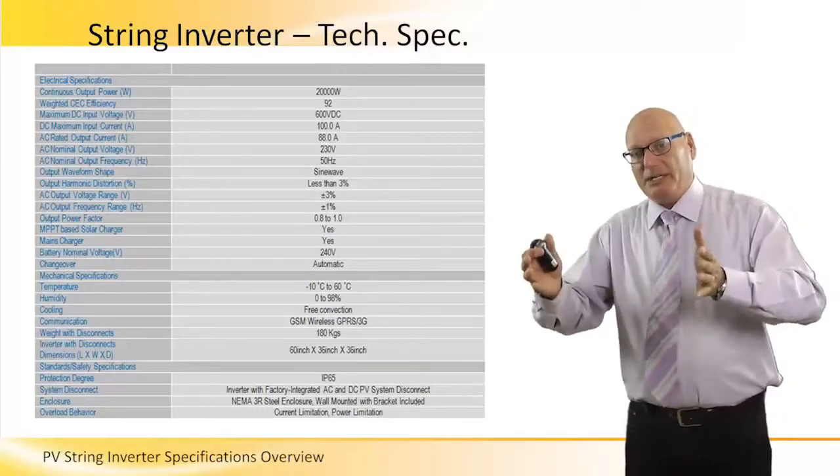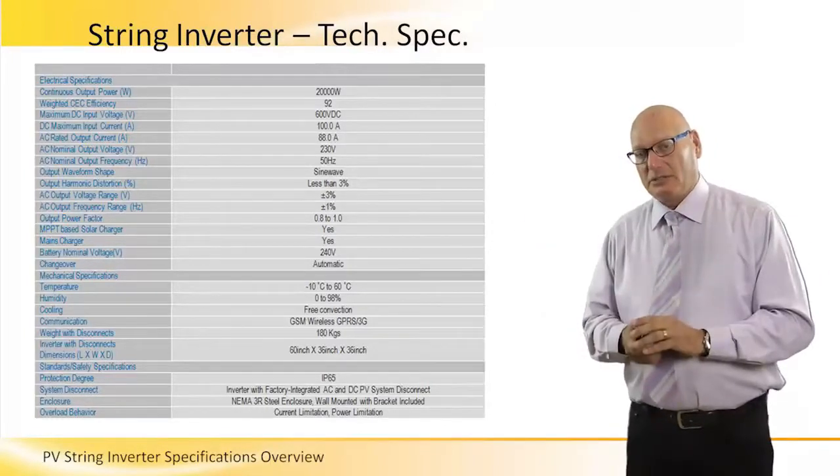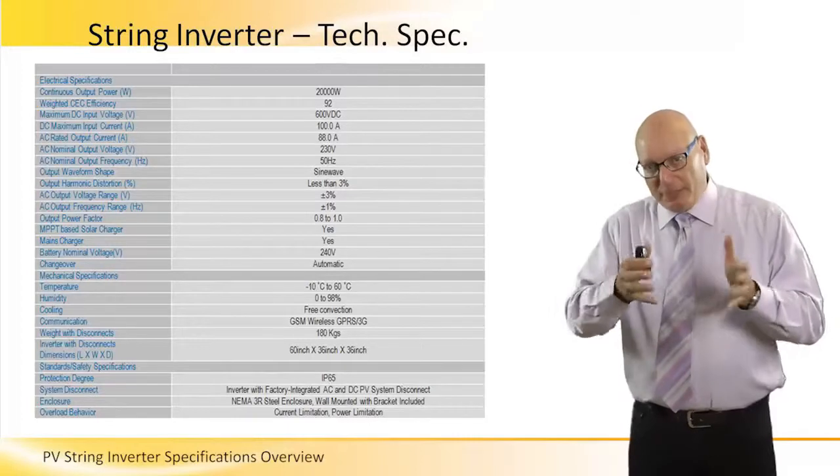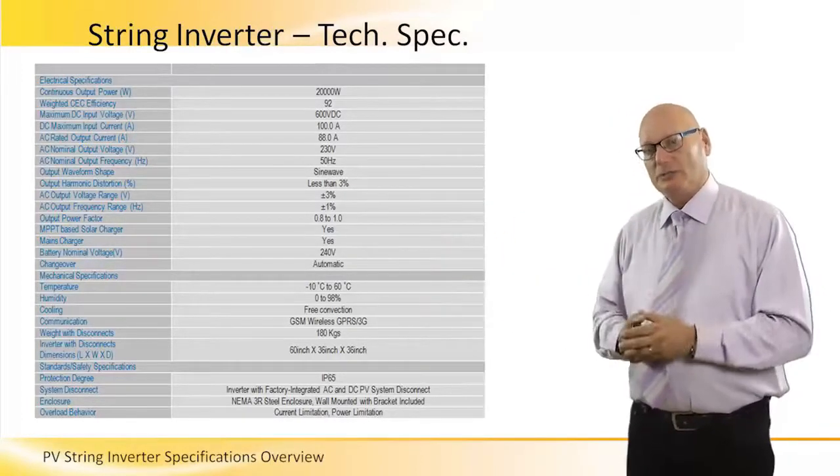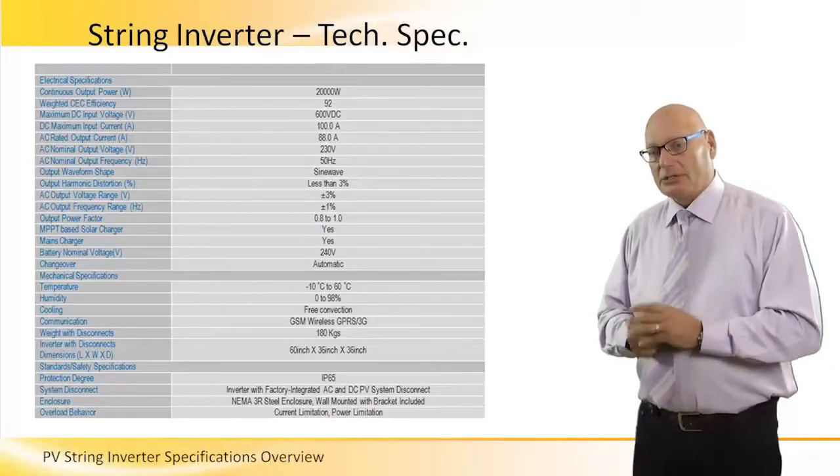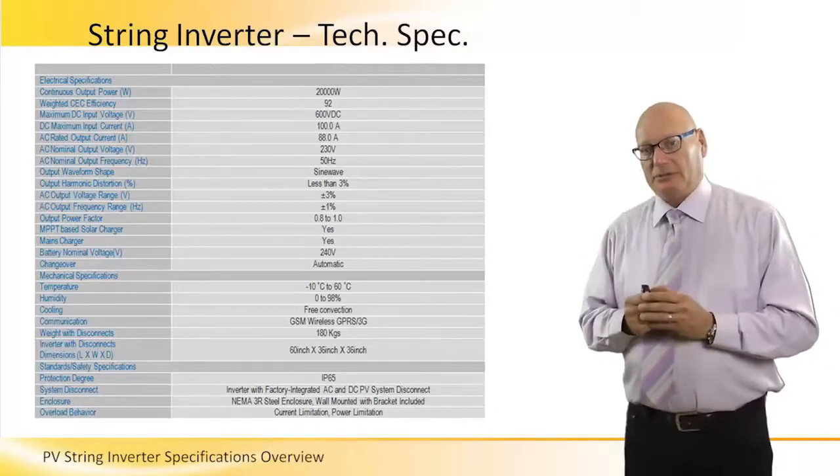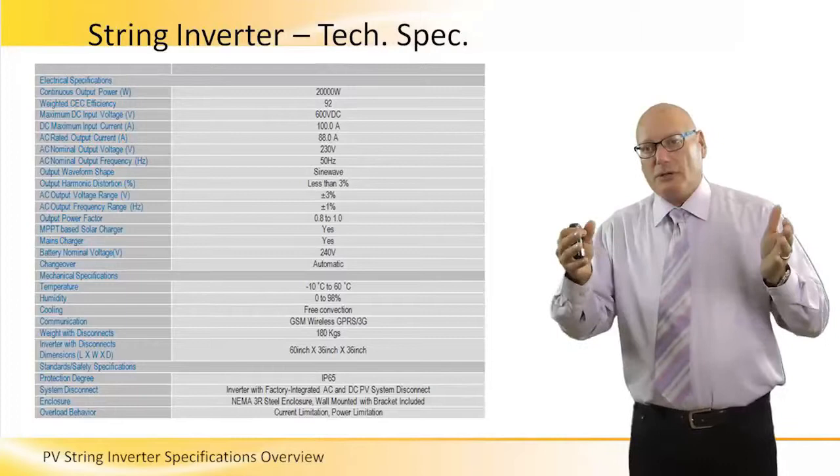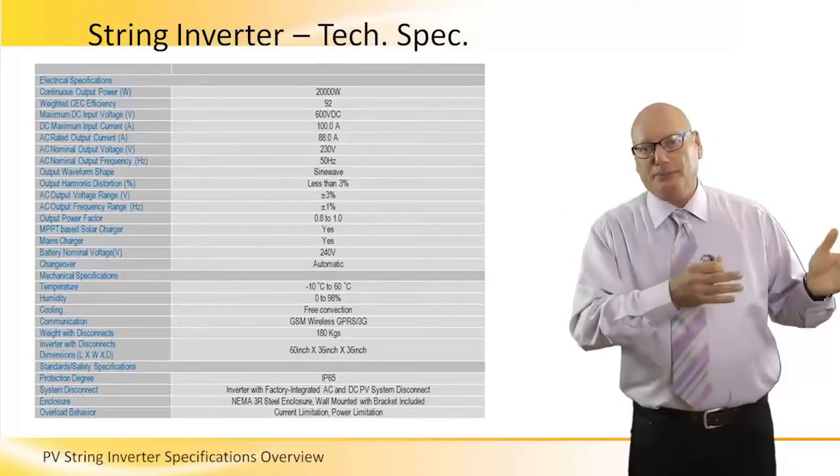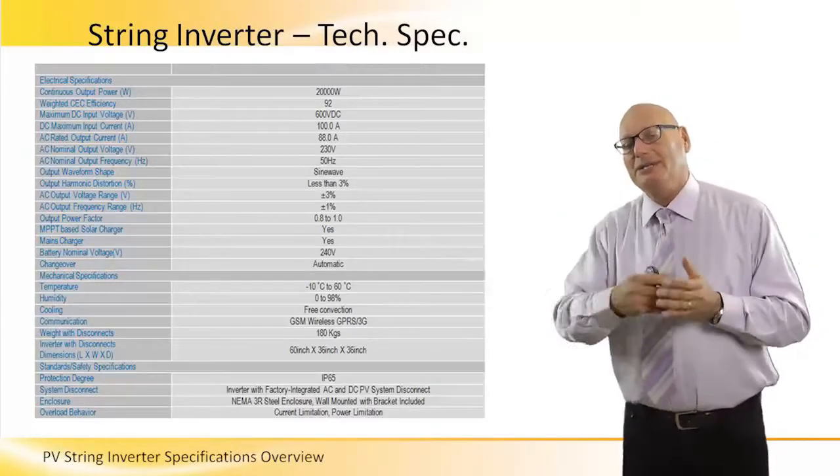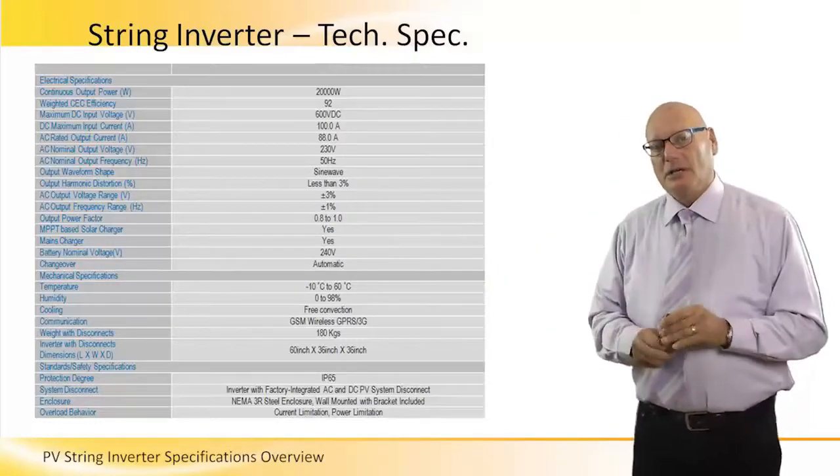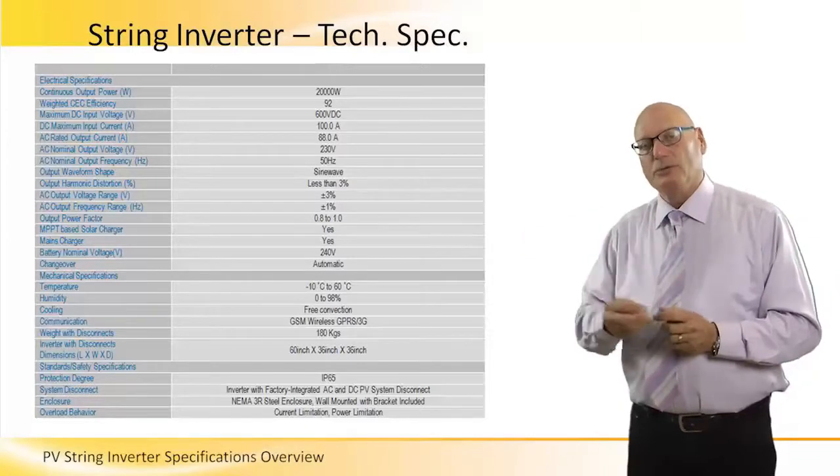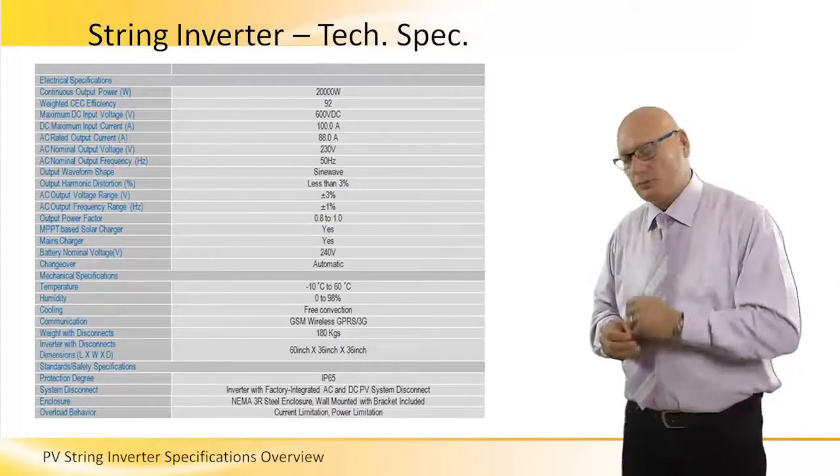Remember, if each panel is 200 watts, we know how many panels we need for 20,000 watts: 100 panels. So no matter what, no way more than 100 panels connected together in series can be connected to a string inverter that is designed to produce 20,000 watts.